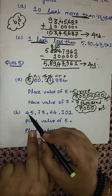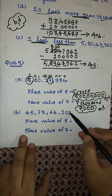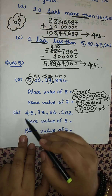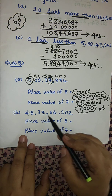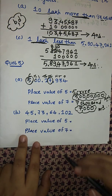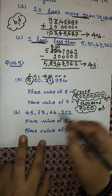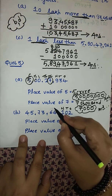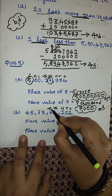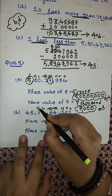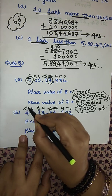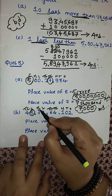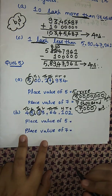Moving to the next question: 45 crores 73 lakh 64 thousand 1 hundred and 2. The place value columns are: ones, tens, hundreds, thousands, ten thousands, lakhs, ten lakhs, crores, ten crores. Again, 5 is situated at the crores place and 7 is situated at the ten lakhs place.